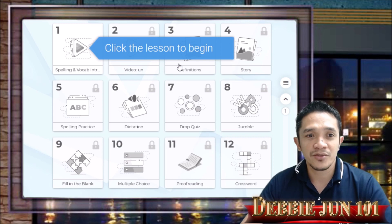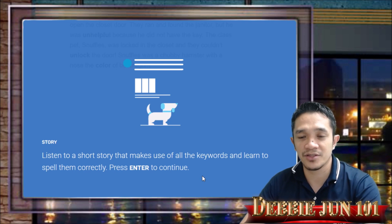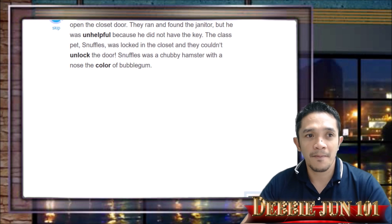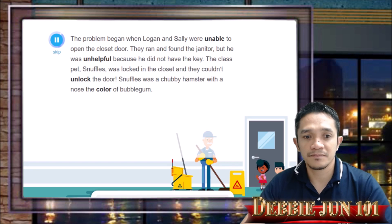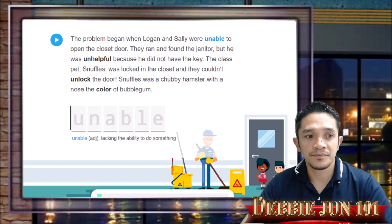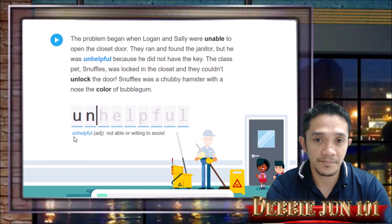Click number 4, then click Continue. This is a story activity — press Enter on your keyboard. The story goes: the problem began when Logan and Sally were unable to open the closet door. They ran and found the janitor, but he was unhelpful because he did not have the key. The class pet Snuffles was locked in the closet and they couldn't unlock the door. Snuffles was a chubby hamster with a nose the color of bubblegum. You have a story and now you type the words — 'unable,' 'unhelpful,' 'unlock,' 'color' — using your keyboard with proper finger placement.